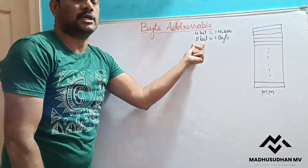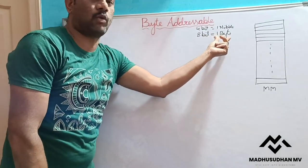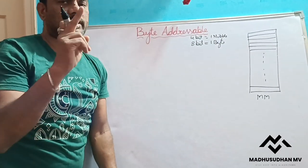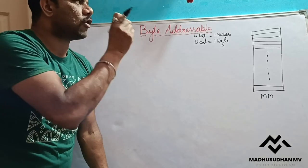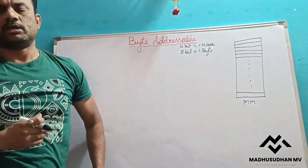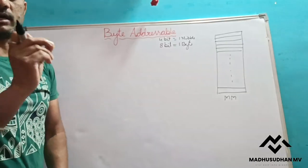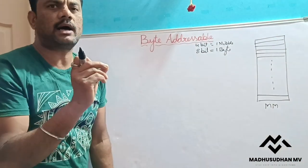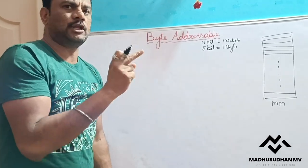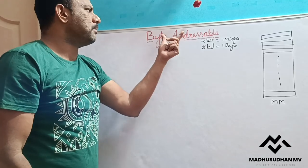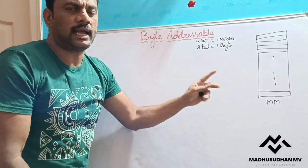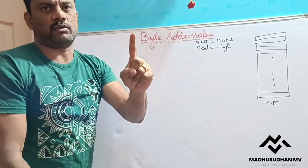Since the CPU handles groups of bits and memory has so many storage cells storing only 1 bit each, it is not practical to give a separate address to every single bit. Instead of assigning 1 address to 1 bit, we assign 1 address to 1 byte. Because we assign addresses at the byte level, our memory is called byte addressable.